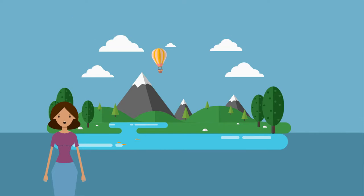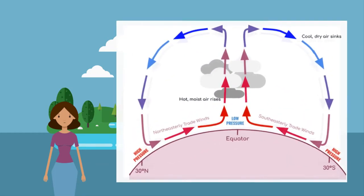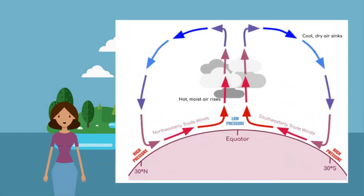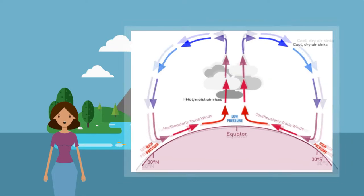Let's consider high rainfall areas first. High rainfall areas are found in areas of low pressure. The sun shines directly on the equator, making it consistently warmer than the poles. Hot moist air rises here, creating an area of low pressure — an equatorial low. When the moist air rises it condenses to form rain clouds, causing the climate at the equator to be humid and very rainy. Tropical rainforests are found here due to the warm, wet weather.